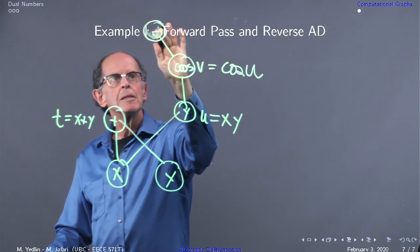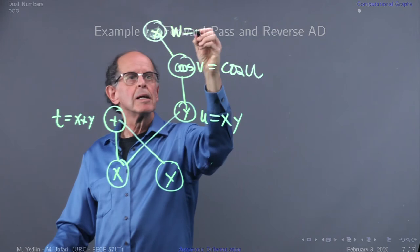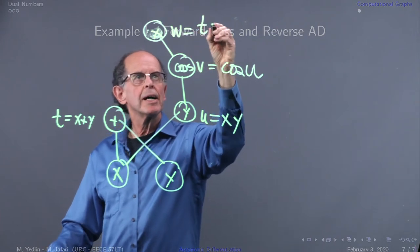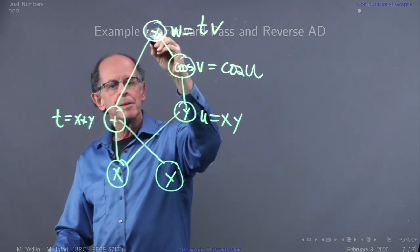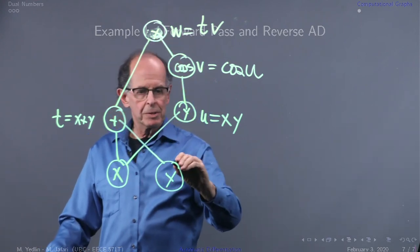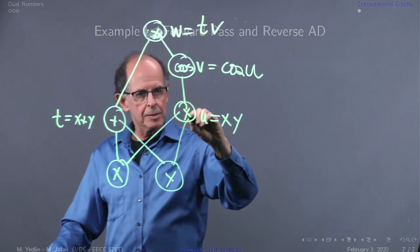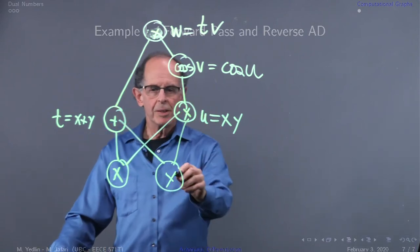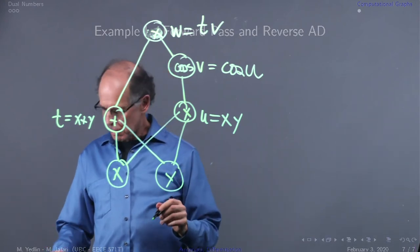Now we're going to create our final output w, and w is equal to a product of t and v. So t is going up to here, and we're feeding the function the value y up to here. That's our computational graph.